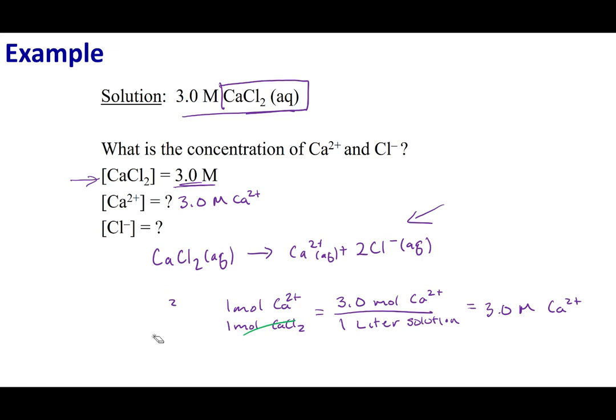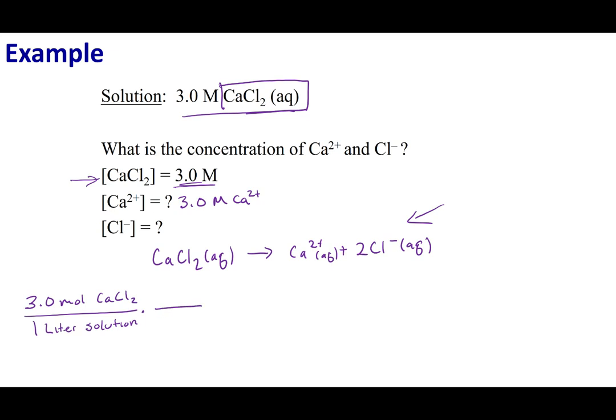Now we can do this for the anion as well. So again, we're going to start out with what's written on the bottle. We can use our dissociation reaction to set up a mole fraction. And so in this case, for every one mole of CaCl2, I get two moles of Cl-. I can cancel things out, and I'm left with six moles of Cl- over one liter of solution. And remember, six moles over one liter, well that's 6.0 molar Cl-.